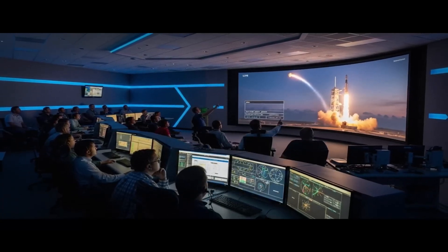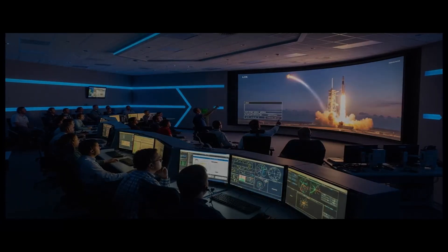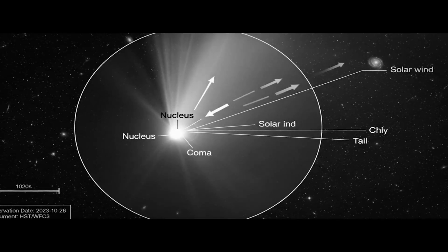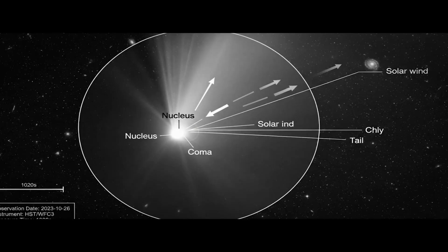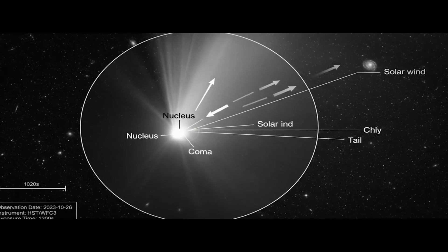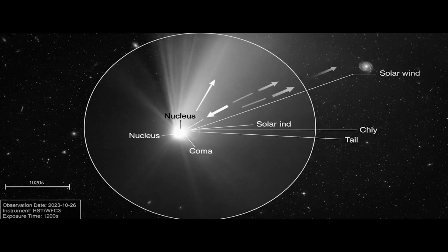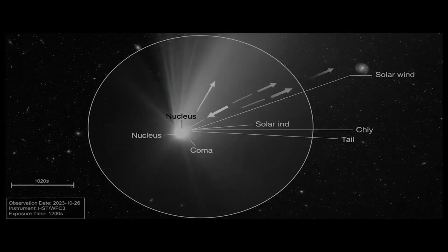As 3I-Atlas moves into a more visible region of the sky, astronomers from different parts of the world prepare coordinated observation campaigns. ESA, NASA, and the Japanese consortium JAXA are joining forces to track the object over the coming weeks. Geostationary satellites, orbiting telescopes, and ground-based observatories will be synchronized to create a continuous line of observation.